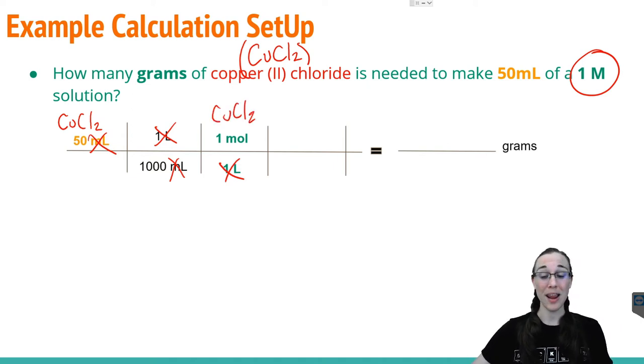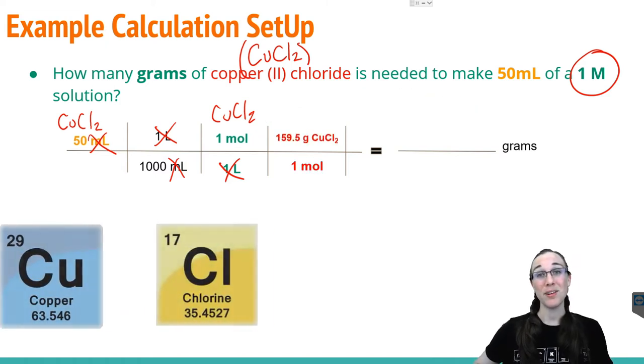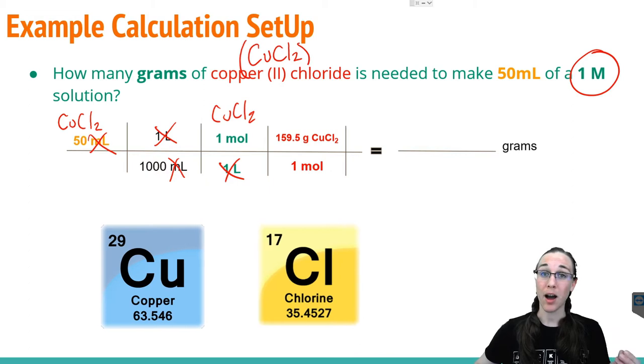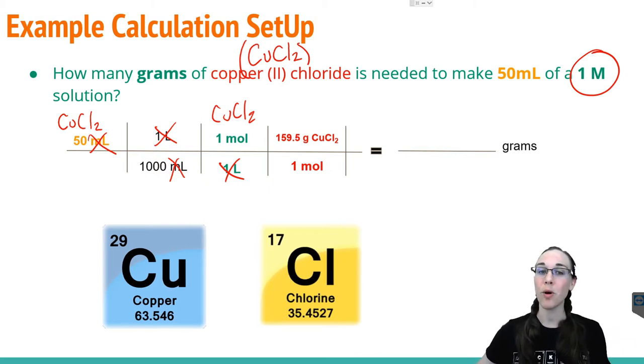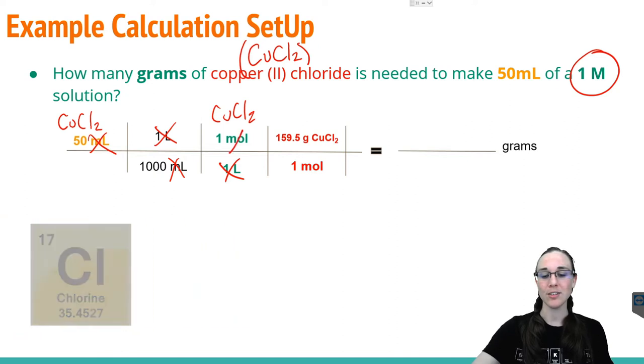To get from moles to grams, which is our goal here, we just need the molar mass of CuCl2. Looking at our periodic table, if we add up the mass of copper and two chlorines, we get 159.5 grams per mole. Our moles cancel now.